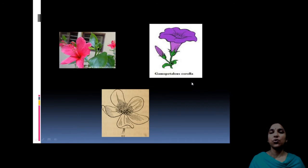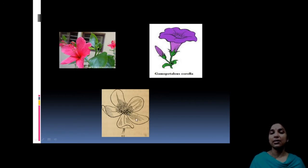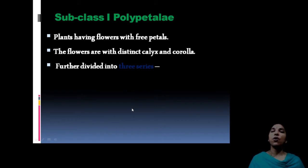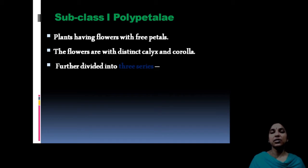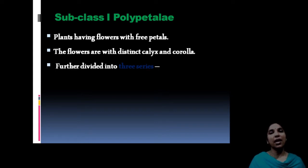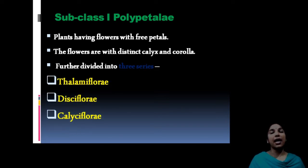In Polypetalae, the petals are free — you can remove them one by one. In Gamopetalae, petals are united. In Monochlamydeae, there is no differentiation into petals and sepals; only a single whorl is present. Polypetalae has flowers with a distinct calyx and corolla, and it divides into three series: Thalamiflorae, Disciflorae, and Calyciflorae.